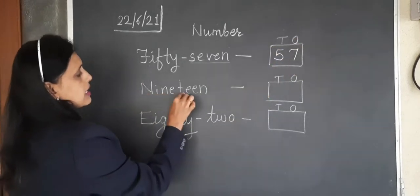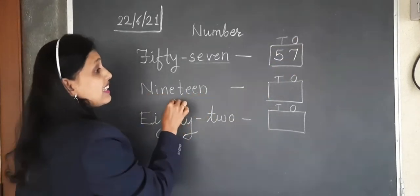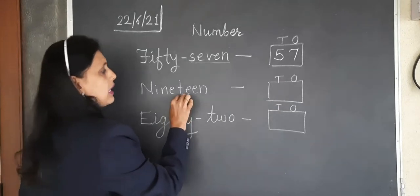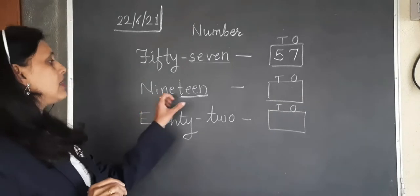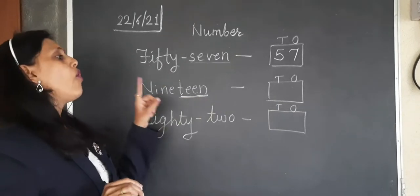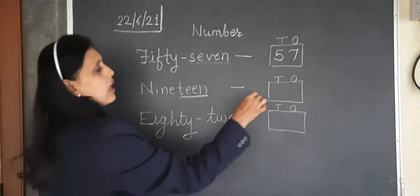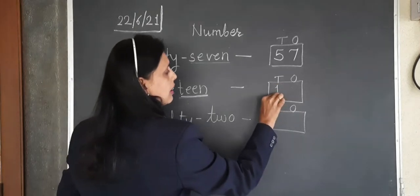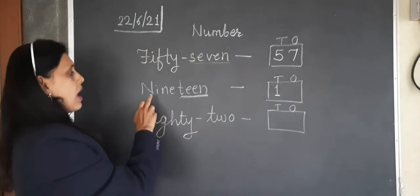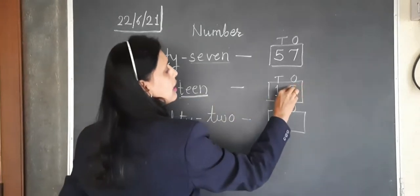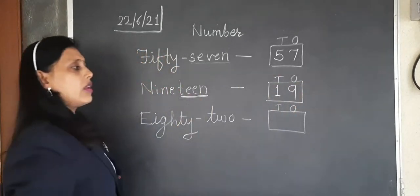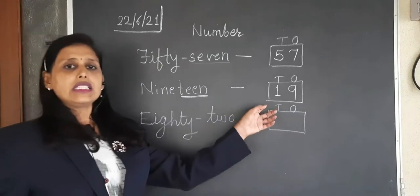Next one is nineteen. Here T-Y is not there. Here T-E-E-N is there. So 19 we need. Whenever double T-E-N is there, always 1 is coming in the tens column. And it is attached with 9, so 9 will be written in the ones column. So this is your 19 number.